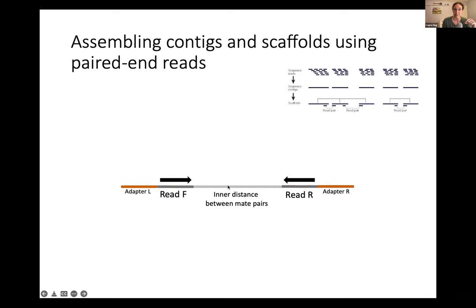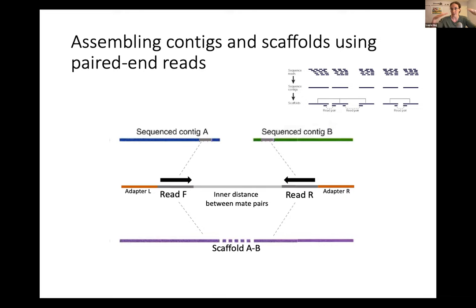When we're scaffolding, we can use this paired-read information. If we have sequence contig A and sequence contig B, and our forward read is on contig A facing one direction while the reverse read is on contig B facing the other direction, then we know there was a physical connection between these two sites and we can order and orient scaffold A and B with this information. Normally you'd have many different read pairs spanning this gap — the distance missing is usually only a few nucleotides where we just haven't managed to sequence an overlap to create a complete contig.